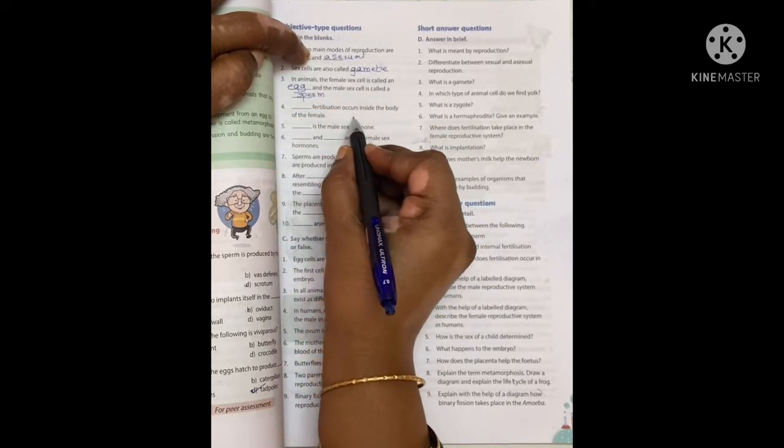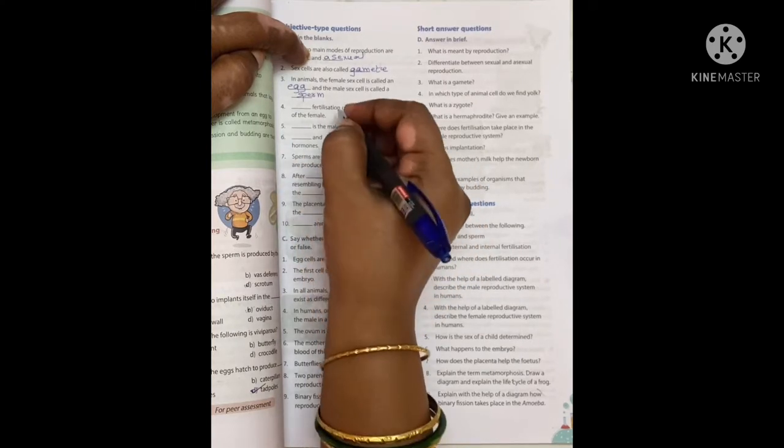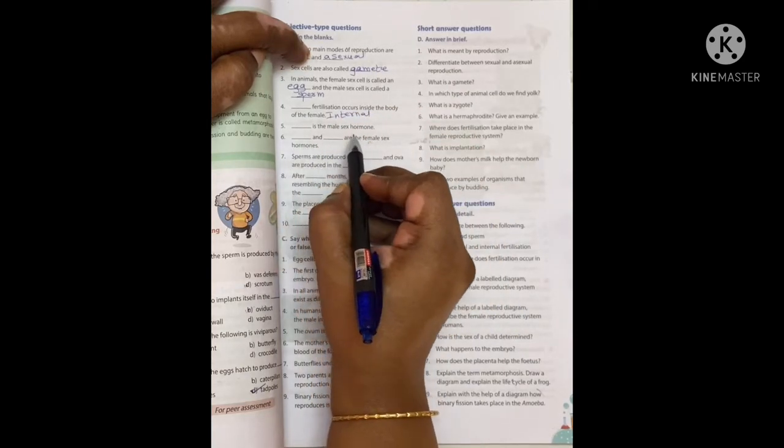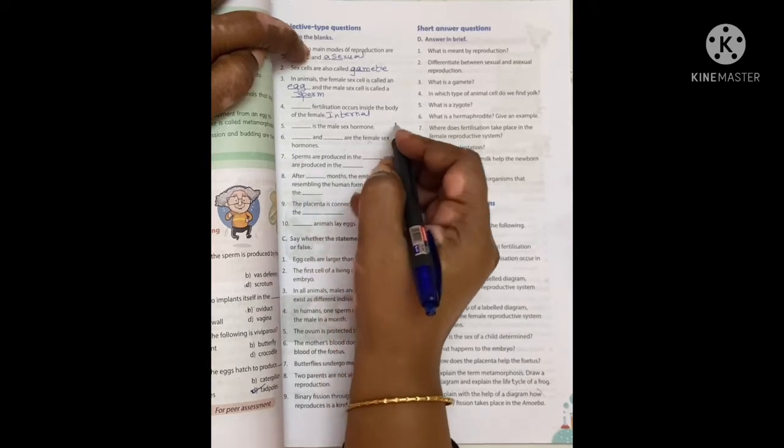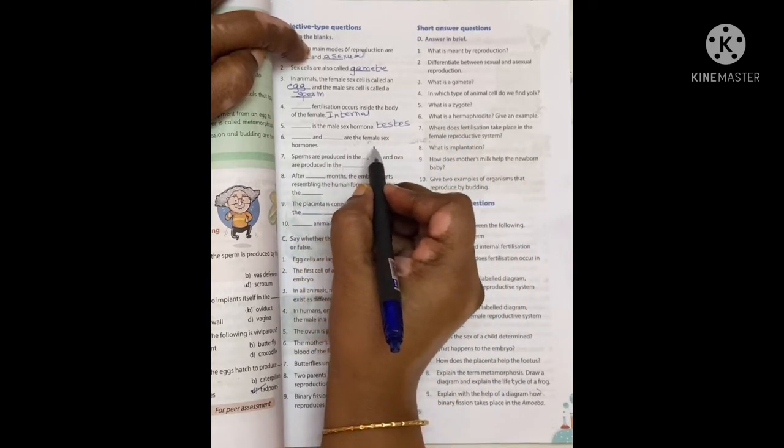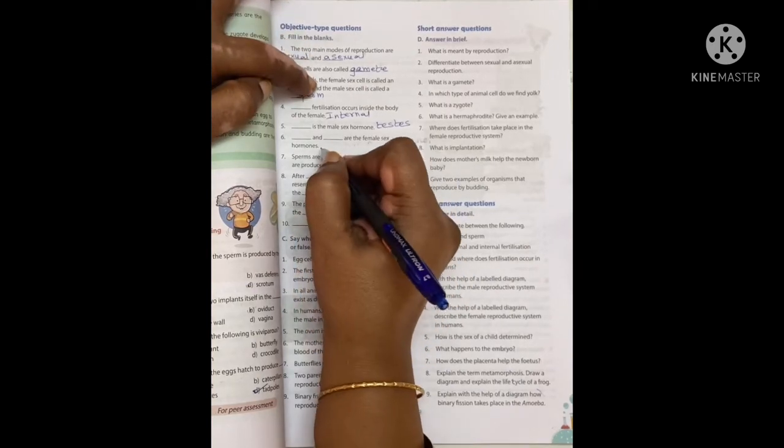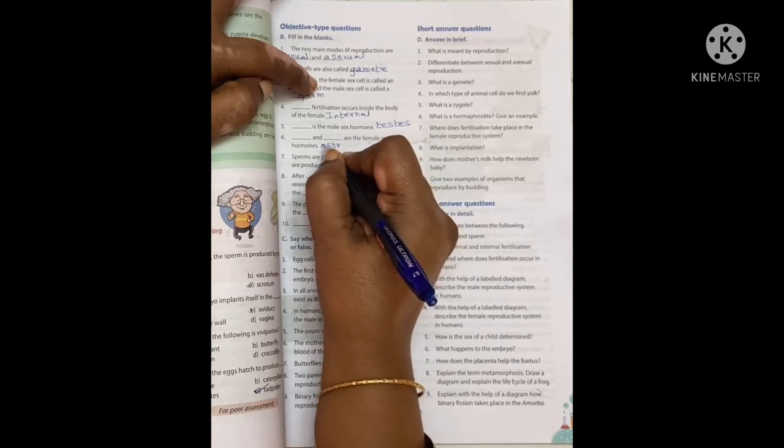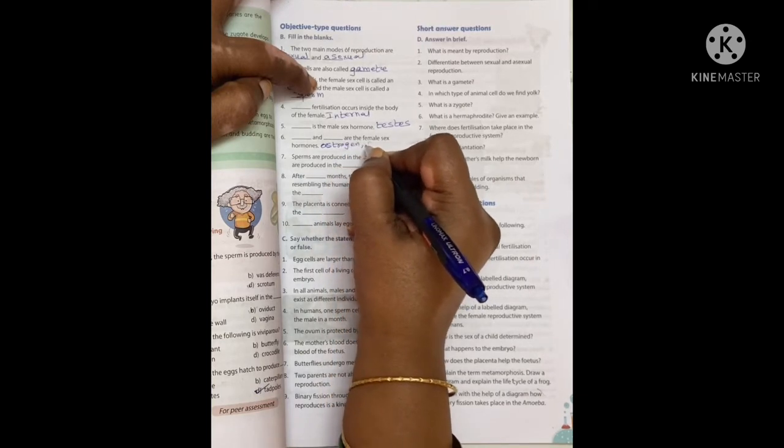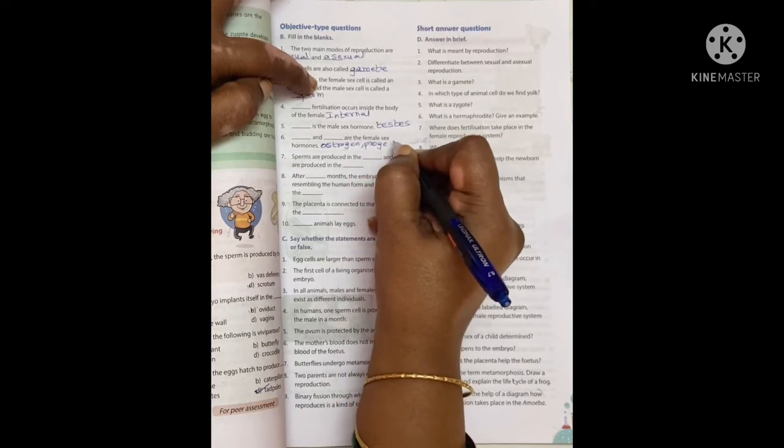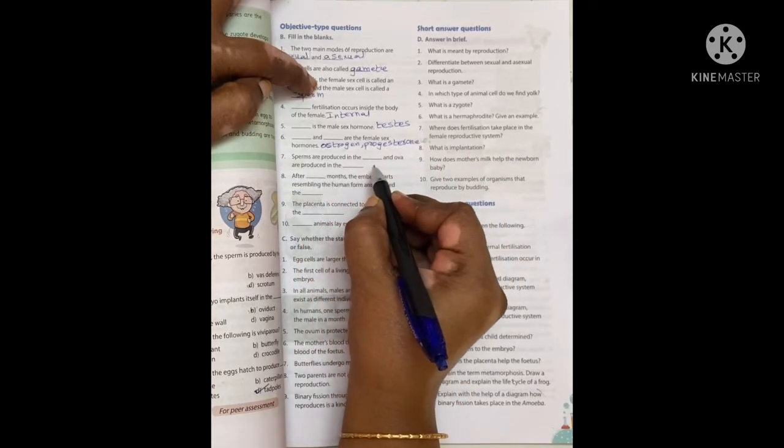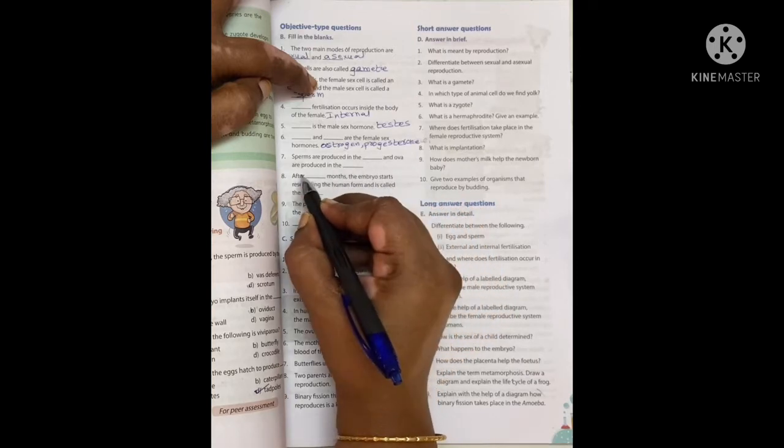Internal fertilization occurs inside the body of the female. Testosterone is the male sex hormone. Progesterone and estrogen are the female sex hormones.